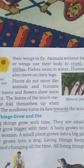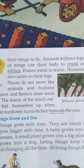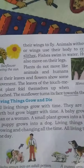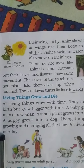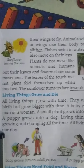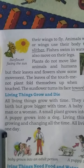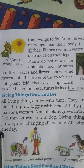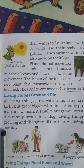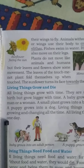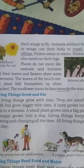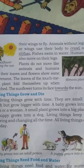Humans also move on their legs. Plants do not move like animals and humans, but their leaves and flowers show some movement. The leaves of the touch-me-not plant fold themselves when touched. The sunflower turns its face towards the sun.